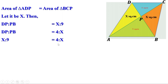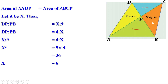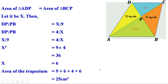Since the two ratios are equal, the product of the end terms equals the product of the middle terms: X × X = 9 × 4. So X² = 36, therefore X = 6. The area of each side triangle is 6 cm². Now we have all four triangle areas, so the area of trapezium ABCD = 9 + 6 + 4 + 6 = 25 cm².